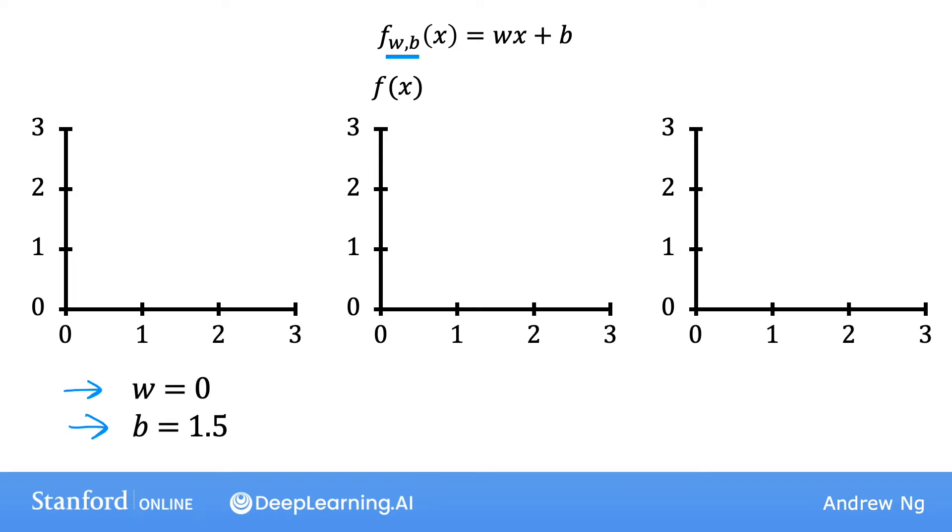When w is equal to zero and b is equal to 1.5, then f looks like this horizontal line. In this case, the function f of x is zero times x plus 1.5, so f is always a constant value. It always predicts 1.5 for the estimated value of y. Here, b is also called the y-intercept because that's where it crosses the vertical axis on this graph.